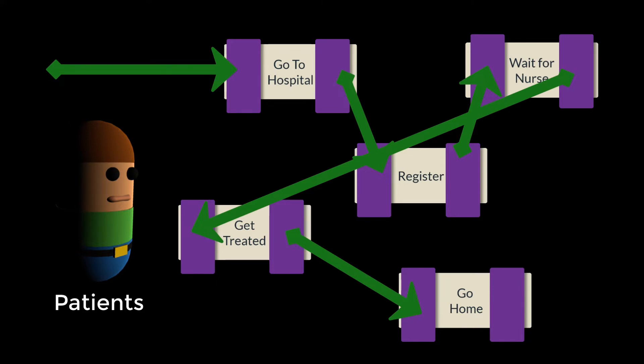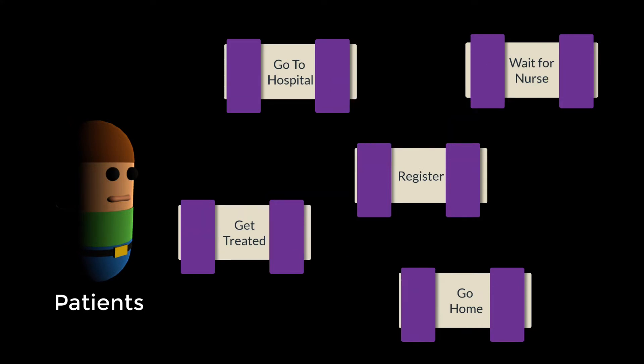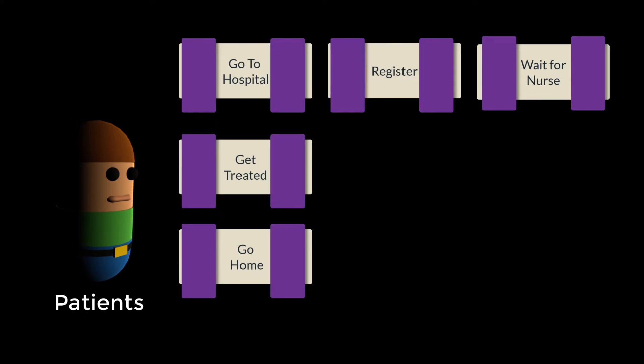What we're going to do in our application is structure it a little more so that the patient has three sets of plans. The reason for this is that in the simulation, the agent has other resources and other agents that it's going to rely on in order to continue through the game. Now, if you just wanted your agent to come into the hospital, go to the registration desk, go and wait, go over to a cubicle, and then go home without any other dynamics, then you could just have a single plan. Once we get into the programming of this, you will see why I have structured it with three different sections.